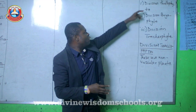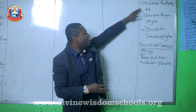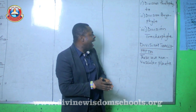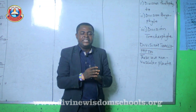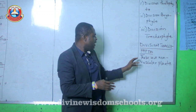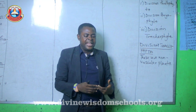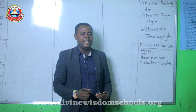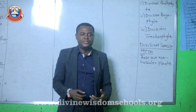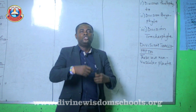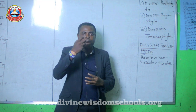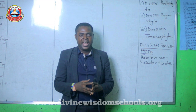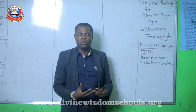Thallophyta and Bryophyta, which are non-vascular plants, are categorized under a subgroup called the cryptogams, while Tracheophyta, which is vascular, is called phanerogams. They don't have conducting tissues — the xylem tissue, which would draw water and soil nutrients from the ground, and the phloem tissue, which would bring about translocation of food produced by photosynthesis from the site of photosynthesis to every other part of the plant. They don't have these two conducting tissues.